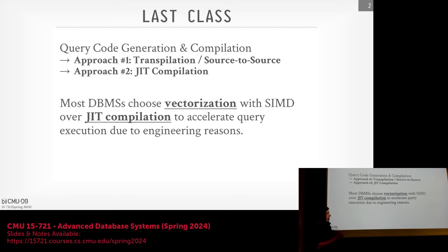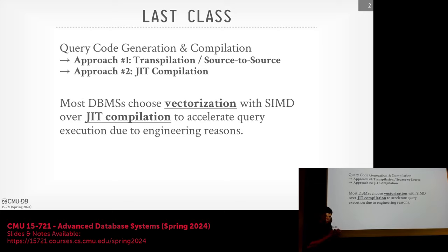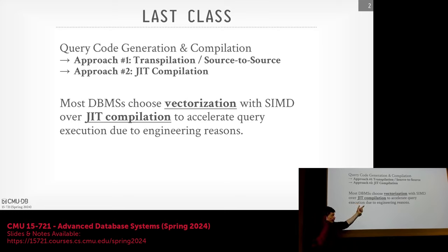The main takeaway since the seminal papers on vectorization and compilation have come out over the last decade is that most of the systems we're going to read about near the end of the semester are going to choose vectorization with SIMD. Oftentimes it's a combination of auto-vectorization and intrinsics. They're going to choose that over compilation just because the engineering overhead to maintain a JIT-compiled database engine is super high. The Photon paper from Databricks explicitly calls out that it's better to have a bunch of people optimize the SIMD stuff, because then you can reach parity with the compilation implementation, versus going down the JIT path where there's a small number of people that can actually work on it.